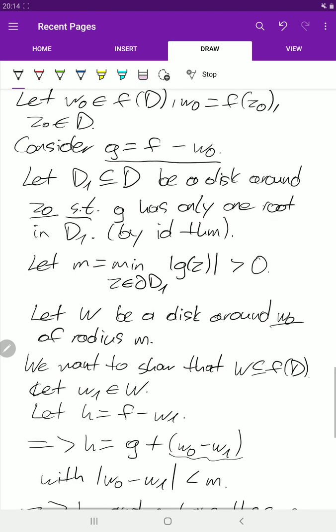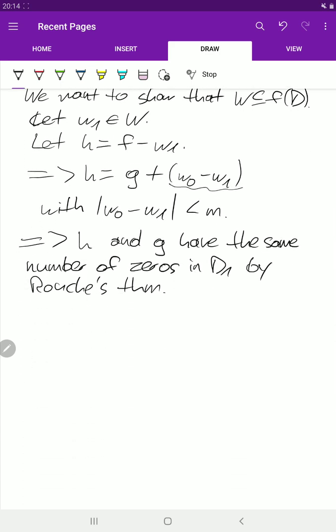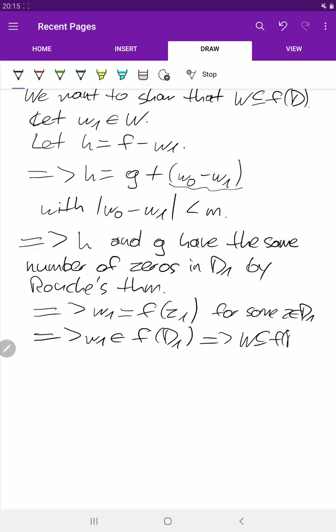So we definitely know that the function G has a zero at z0, so also H has a zero and we can write w1 as F of z1 for some z1 in D1, and we know that this is in the image.